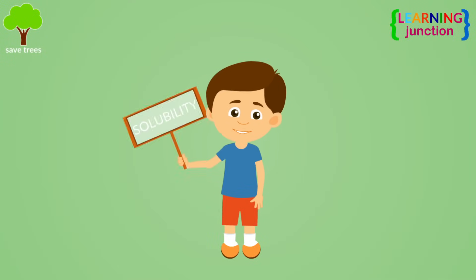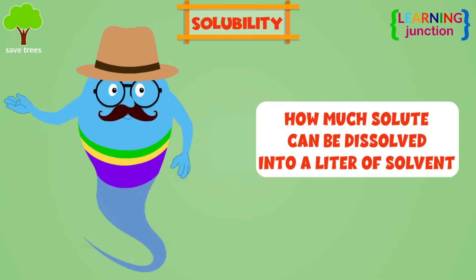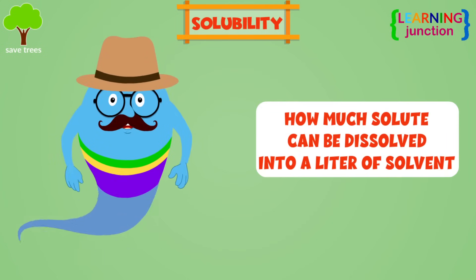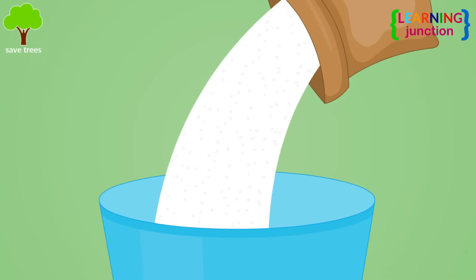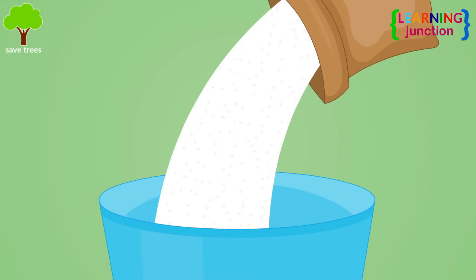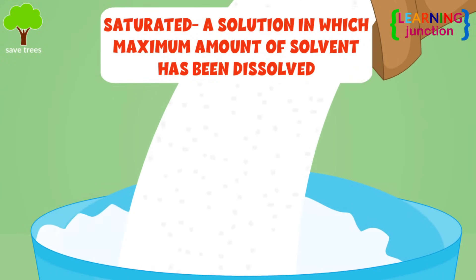Do you want to know about solubility? It is a measurement of how much solute can be dissolved into a liter of solvent. For example, if you keep pouring salt into water, at some point the water isn't going to be able to dissolve the salt. When a solution reaches the point where it cannot dissolve any more solute, it is considered saturated.